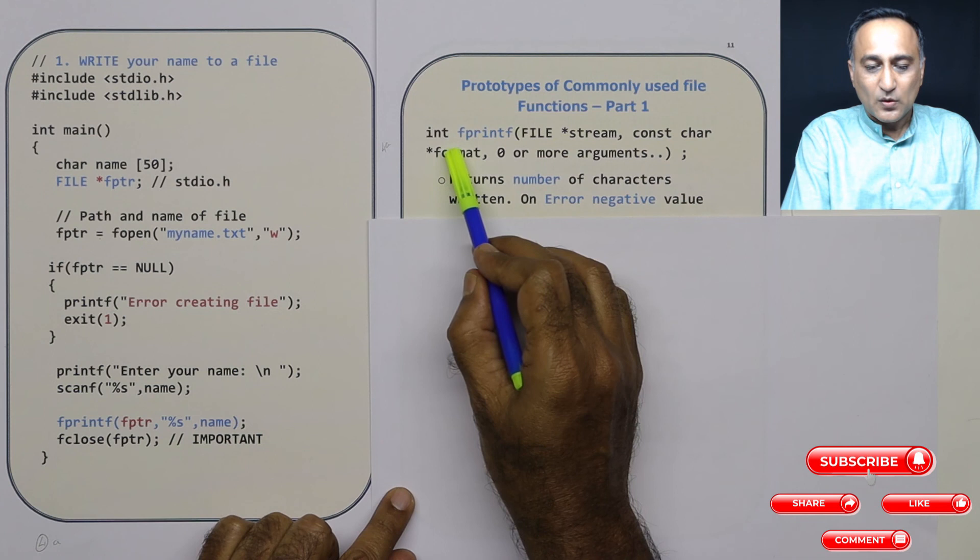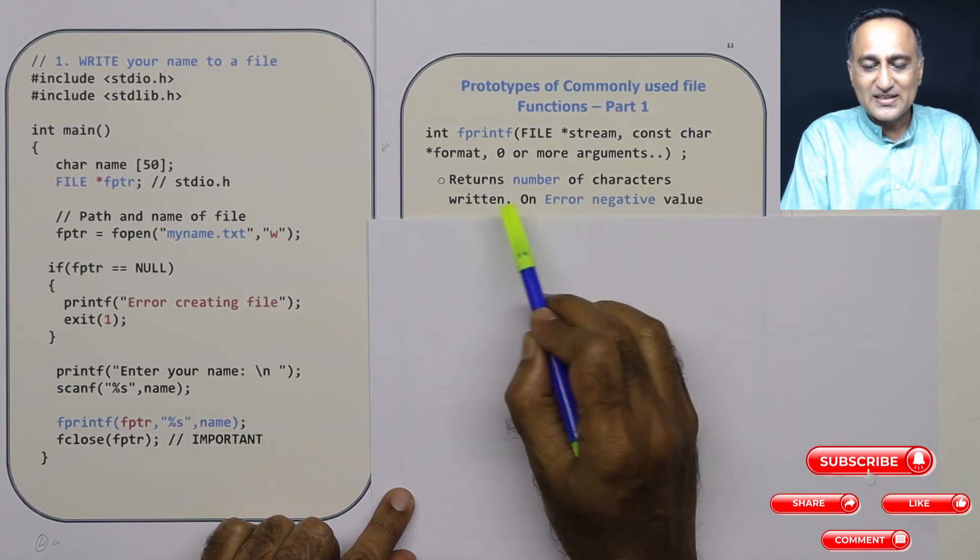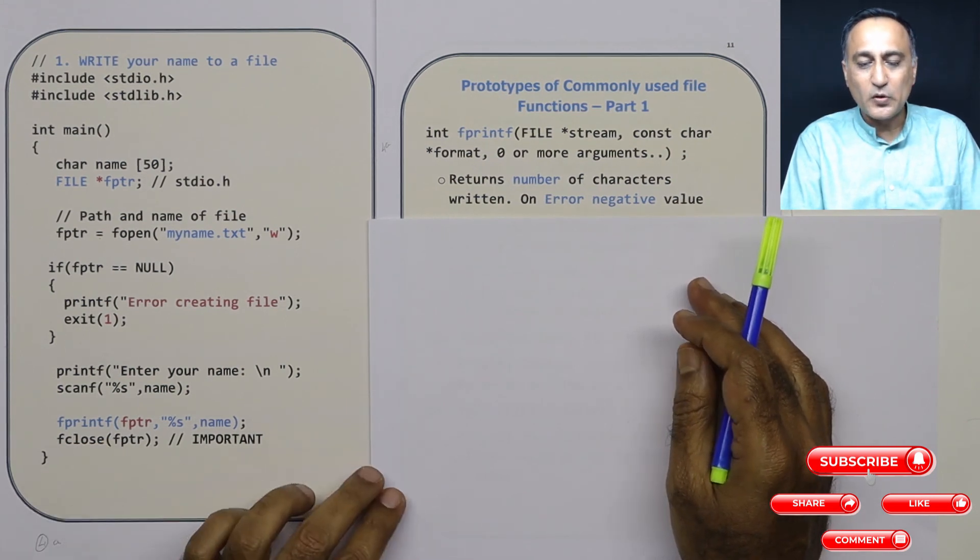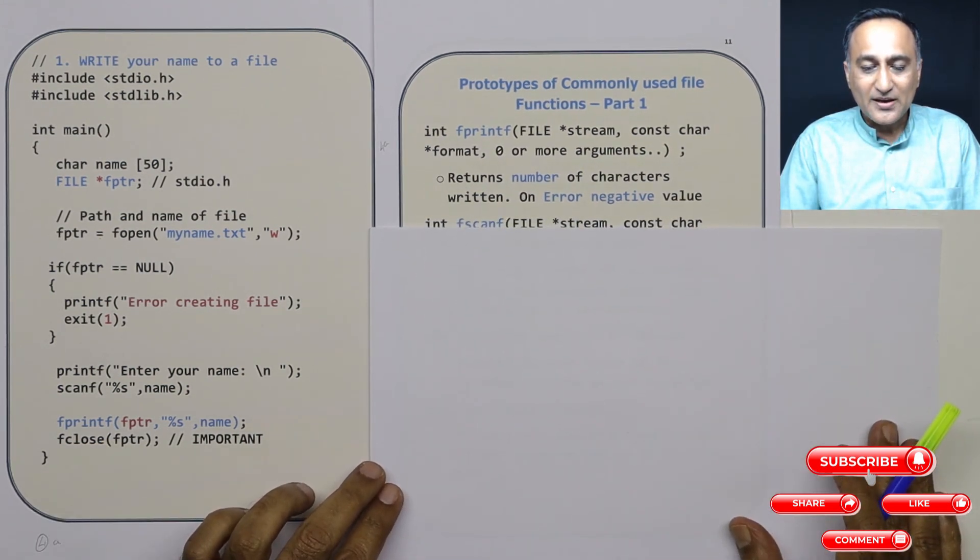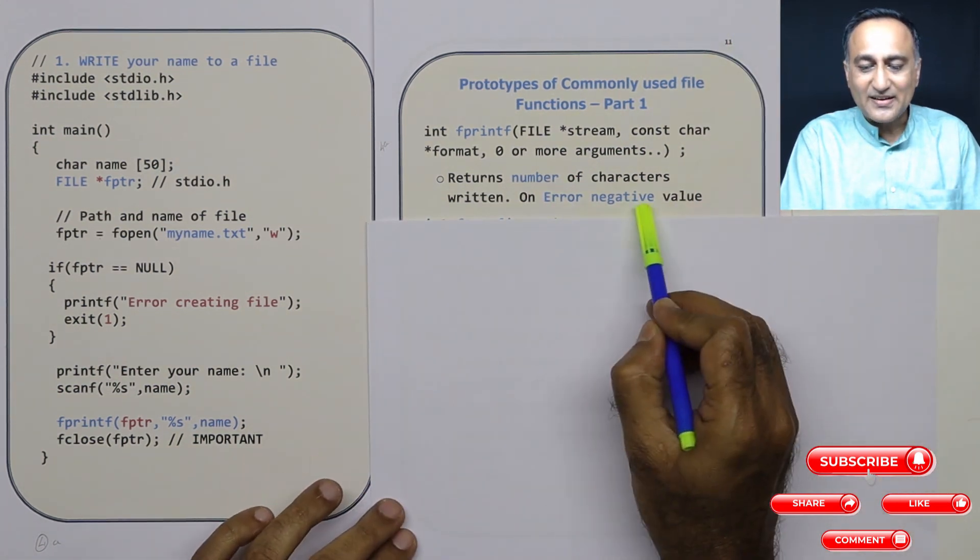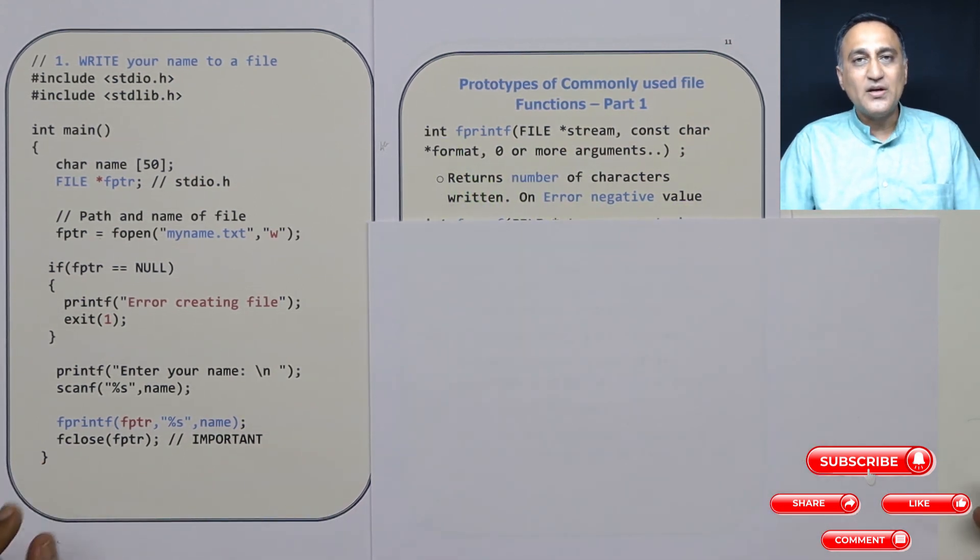Then what is fprintf returning? It returns the number of characters written. So suppose I have written 20 characters, fprintf will return 20. Now, if there is an error while writing, for some reason there is an error, it will return a negative value. So if this int happens to be a negative value, then you should understand that there was some problem trying to use the fprintf while trying to write data onto the hard disk.